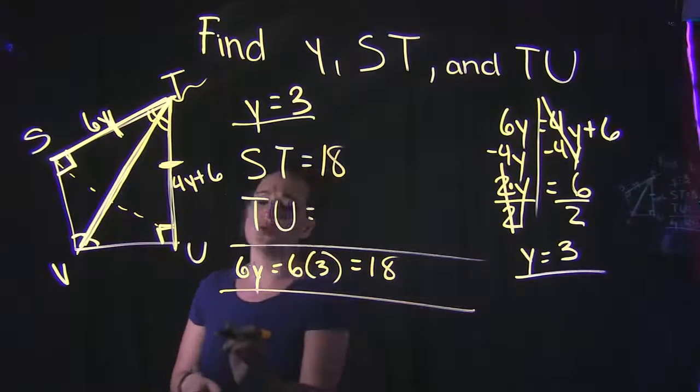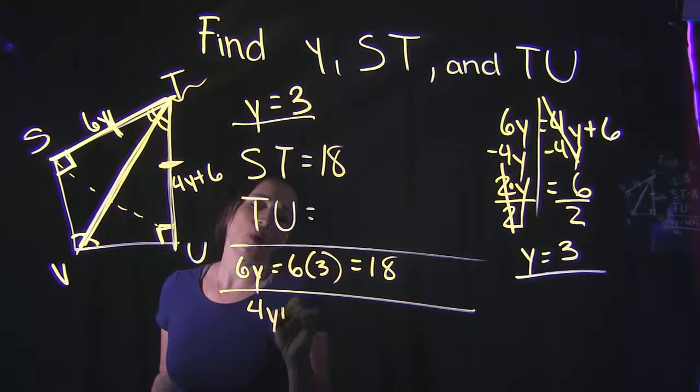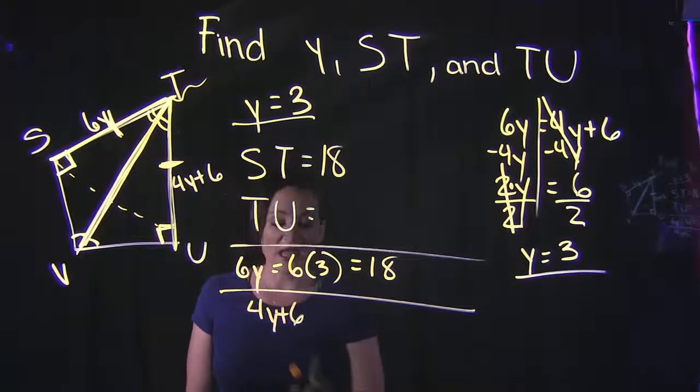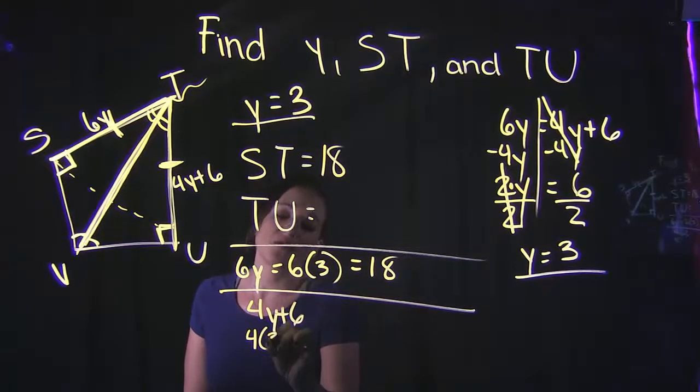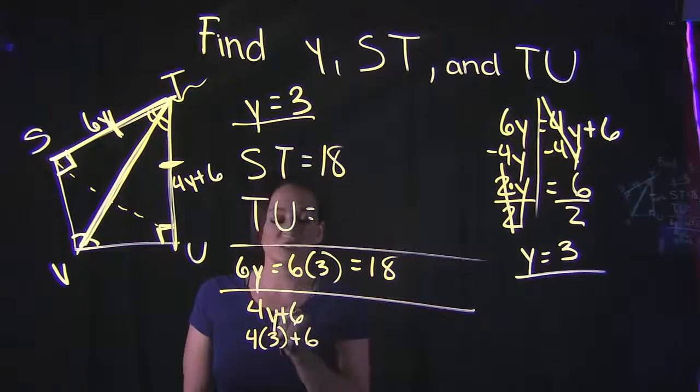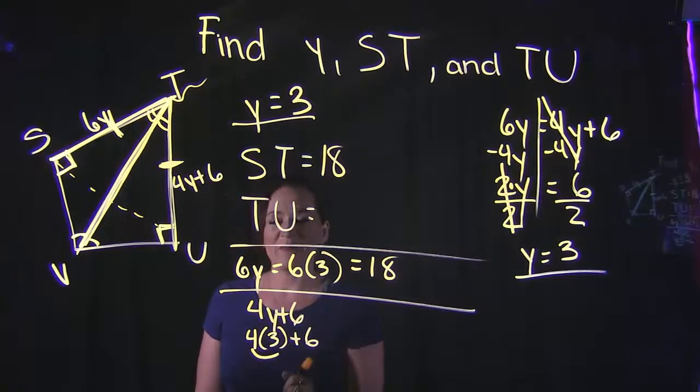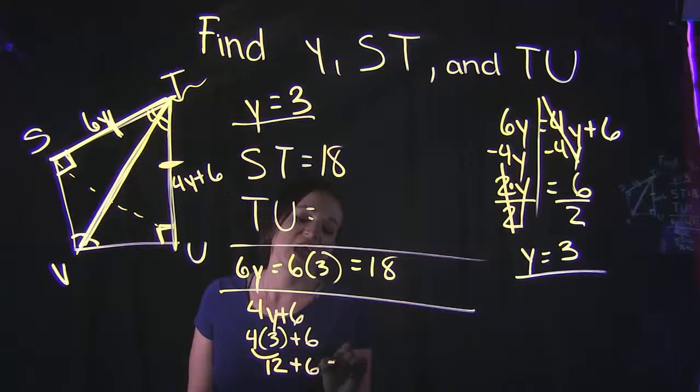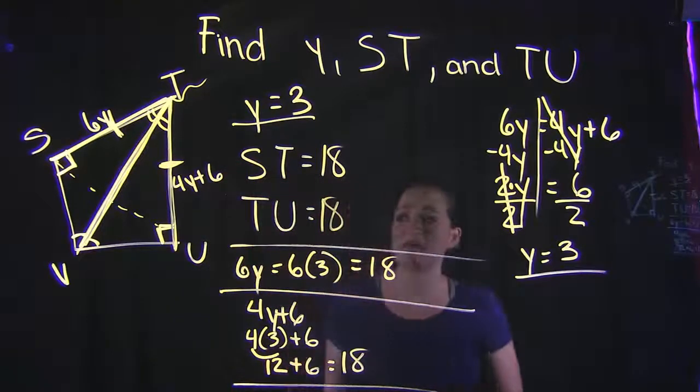Do the same thing with the side TU. TU is equal to 4y plus 6. Instead of y, substitute in a 3. So if we do that, we're left with 4 times 3 plus 6, right? We're literally just erasing the y and putting in a 3. Order of operations tells us to multiply before we add, so 4 times 3 does give us a 12, and 12 plus 6 is equal to 18.